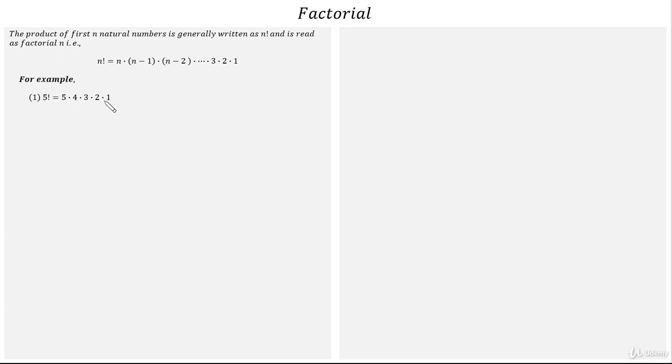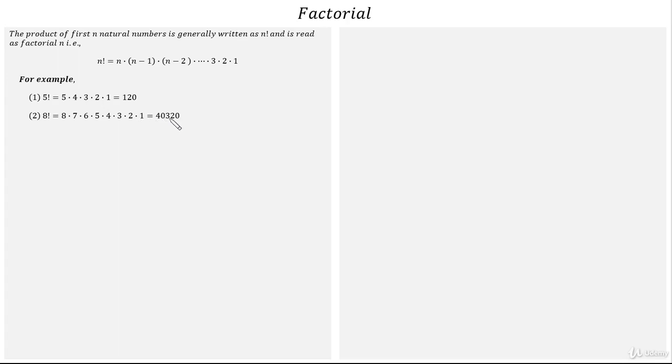For example, factorial 5 can be written as the product of the first 5 natural numbers, that is 5 into 4 into 3 into 2 into 1, which is equal to 120. Similarly, factorial 8 equals 8 into 7 into 6 into 5 into 4 into 3 into 2 into 1, which is equal to 40320.